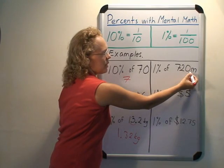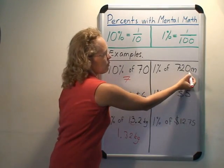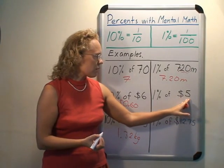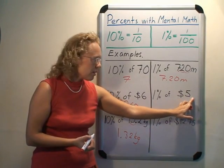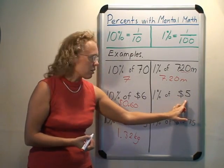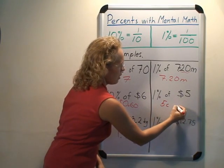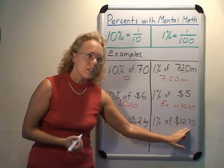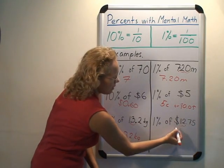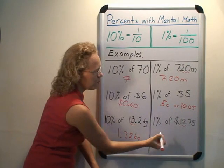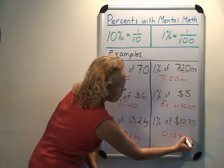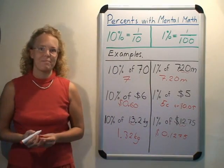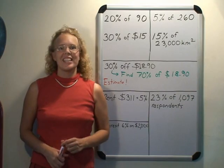Similarly with 1%: 1% of 720 meters — we divide by 100, or move the decimal point two steps, and we get 7.20 meters. 1% of $5: the decimal point moves two steps and we get $0.05, which is five cents. And 1% of 12.75: divide by 100, the decimal point moves in front, we need to add a zero, giving 0.1275. If this were a real money amount in a store, you would round it to 13 cents.